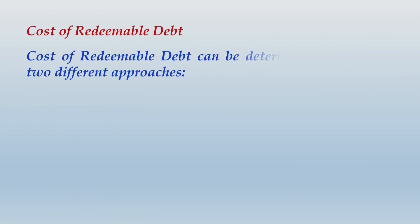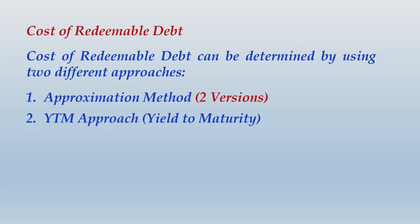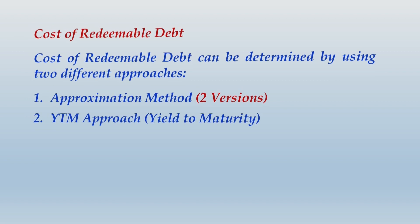Moving ahead to the other category: cost of redeemable debt. Cost of redeemable debt can be determined by two different approaches. One is the approximation method, which itself has two different versions, and the other is the YTM approach, which we call yield to maturity. Let us understand each of these one by one.